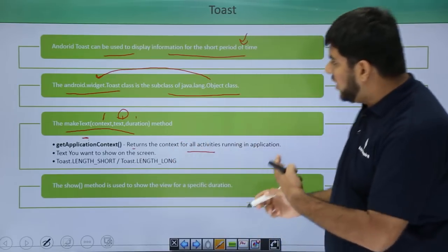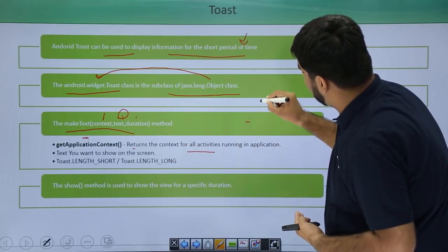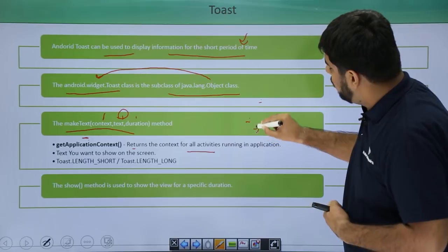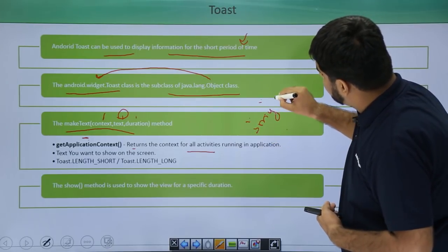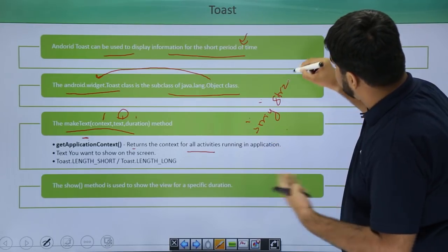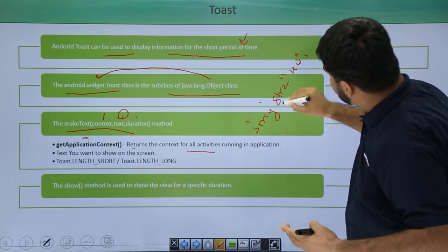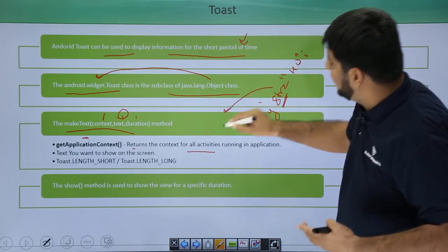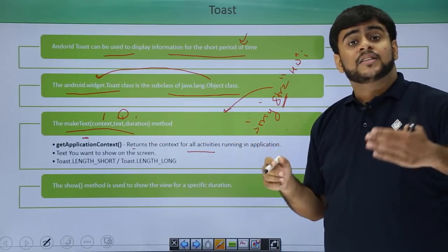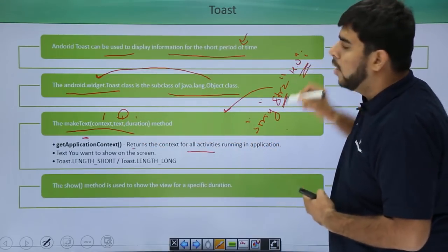Next is the text. You can pass the text in double quotes like this or you can use a Java string to give your text like string str equal to hello world. Now, you can pass this str in this text and this would be showing hello world to the user.